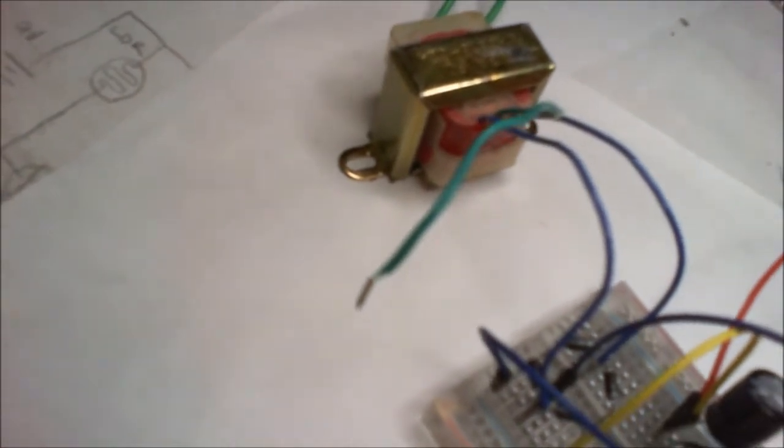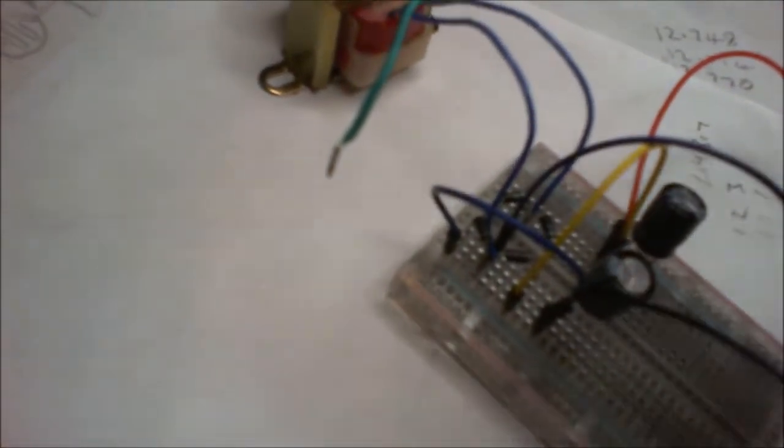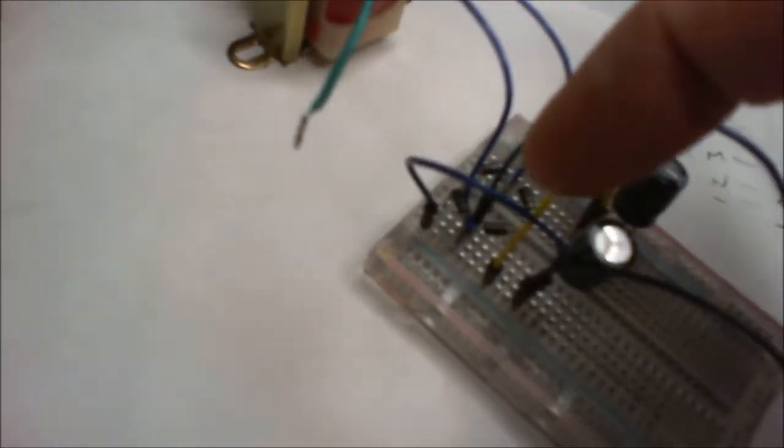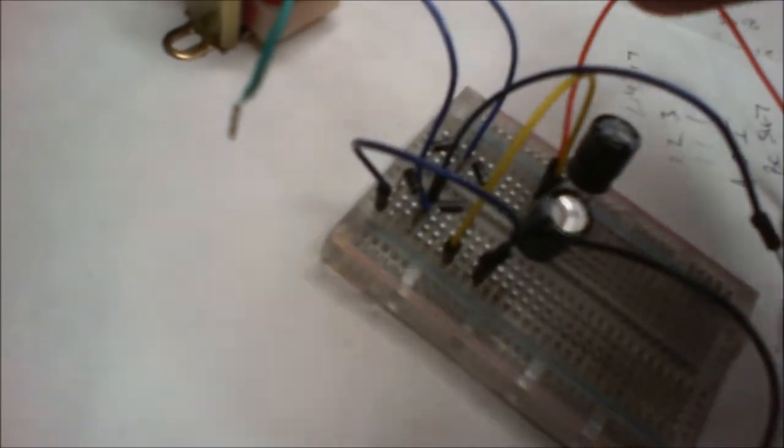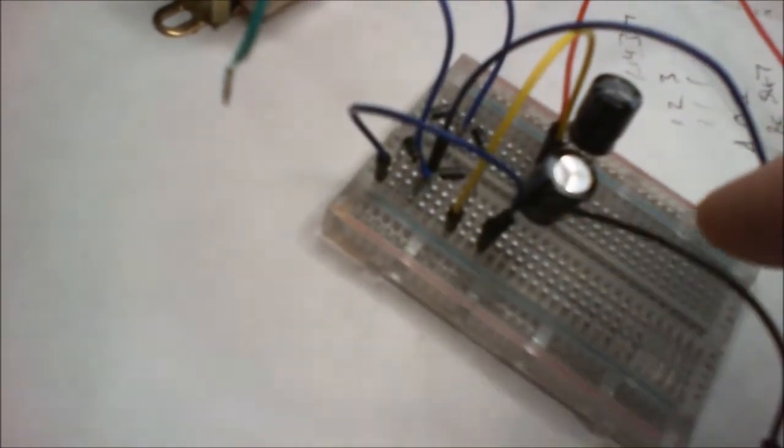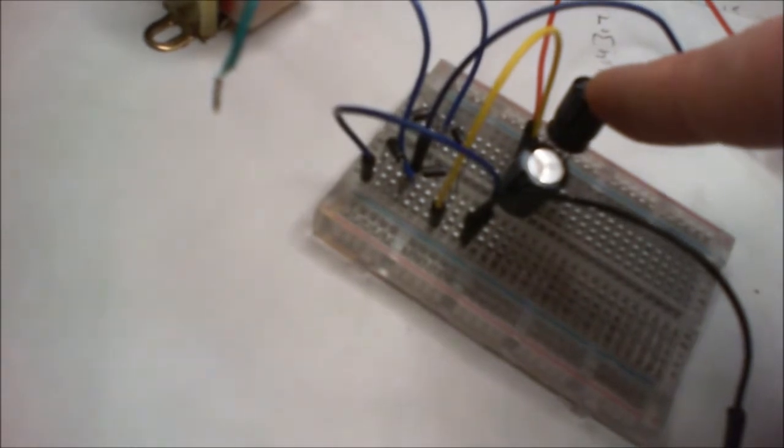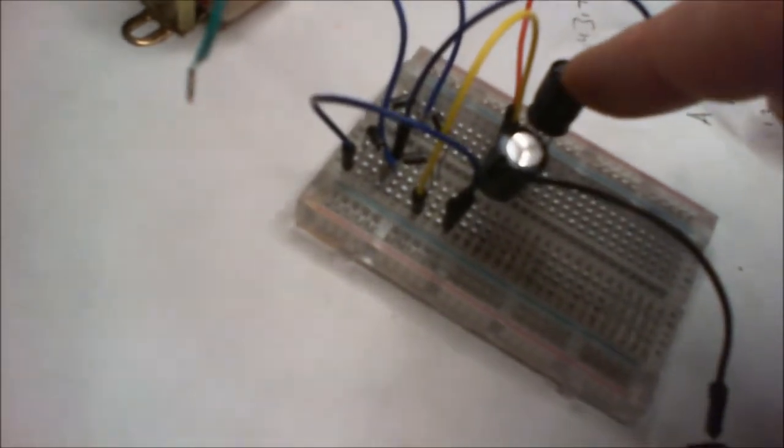For it to be a voltage doubler, you don't need the center tap. All you need is your little bridge rectifier. Your AC will go onto the bridge rectifier as it normally does, either side. Your negative will come out the negative, the positive will come out the positive, as they normally do.